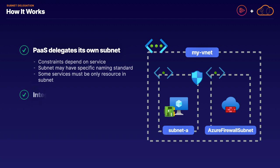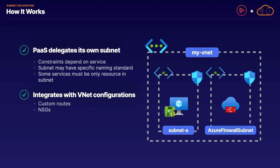There are a number of advantages to working with delegated subnets with external services, which come down to the ability to integrate that managed service within your virtual network as if it is a native resource. This includes being able to incorporate it with custom routes, using network security groups to manage network traffic going to that service, interacting with different hybrid connections to your virtual network, and it also enables private networking with those managed external services and your virtual network resources.